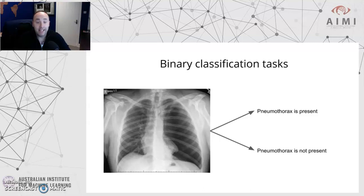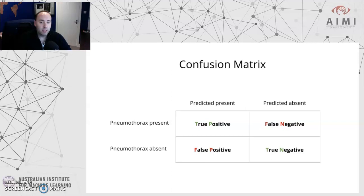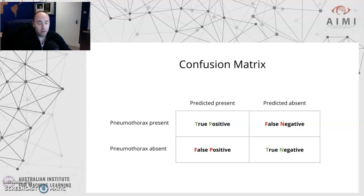If we want to develop a machine learning algorithm and then validate and test it, we want to know how accurate it is at finding pneumothoraces correctly or ruling them out entirely. We can record the results in what is known as a confusion matrix — a simple two-by-two table where you compare the prediction from your algorithm against what's known as a ground truth. The ground truth is defined by an expert radiologist, or a group of consultant radiologists, going through your test set and agreeing on the correct answer.